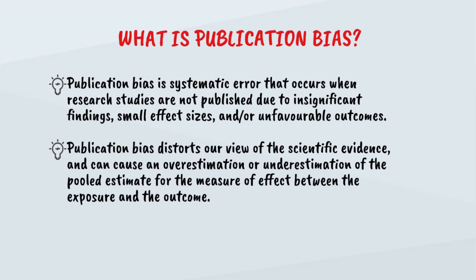Publication bias distorts our view of the scientific evidence and can cause an overestimation or underestimation of the pooled estimate for the measure of effect between the exposure and the outcome. Publication bias can be caused by a multitude of factors, including the lack of financial support for smaller studies, researchers choosing to suppress results due to financial conflicts of interest, or authors who may be more likely to publish studies that conform to their preconceived notions.